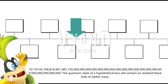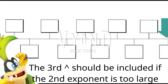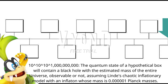10 to the 10 to the 45.70881896148715 Quattrigentillion: the quantum state of a hypothetical box will contain an isolated black hole of stellar mass. 10 to the 10 to the 1 Novemtrigentillion: the quantum state of a hypothetical box will contain a black hole with the mass of the observable universe. 10 to the 10 to the 10 to the 10 to the 10 to the 10 trillion: the quantum state of a hypothetical box will contain a black hole with the estimated mass of the entire universe, observable or not, assuming Linde's chaotic inflationary model with an inflaton whose mass is one millionth of a Planck mass.